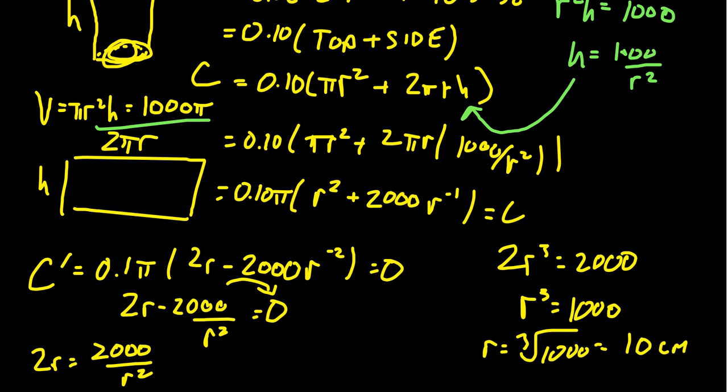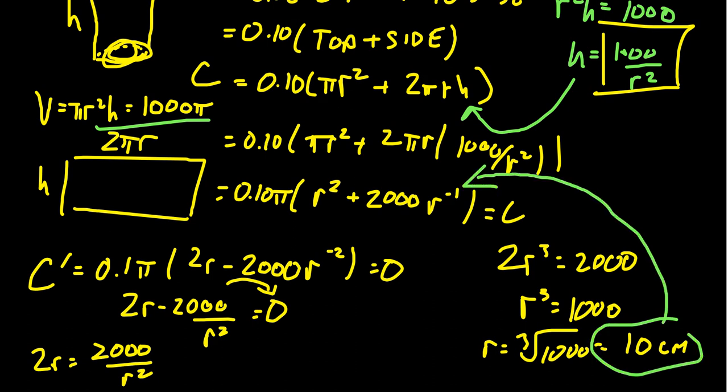So 10 centimeters is the optimal dimension for the radius. We can use the formula to find the height: h = 1000/r² = 1000/100 = 10 cm. So the optimal dimensions are r = 10 cm and h = 10 cm. This gives minimal cost, but we're actually looking for the cost value. We need to plug r = 10 into our cost function.